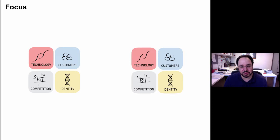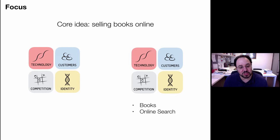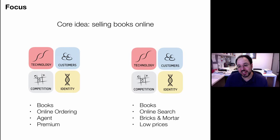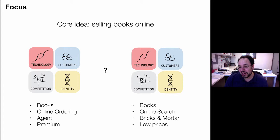What other business model could they have had? Their core idea was selling books online, and they chose to do the books, the online search, compete with bricks and mortar, and have low prices. But they could have taken those book customers and done online ordering for traditional booksellers instead — being an agent for those booksellers and charging a premium for getting books to your door. It's like they chose the opposite of what was successful with WebVan versus Peapod. A whole lot of companies did the left-hand box rather than the right-hand one — and the right-hand one, combined with a lot of skills and implementation, turned out to be right.